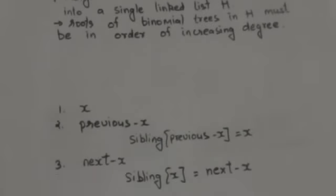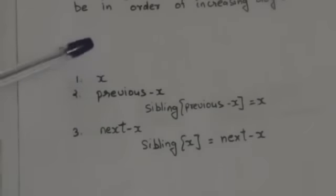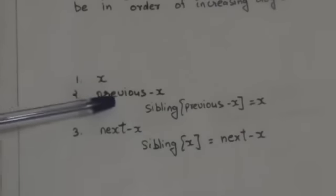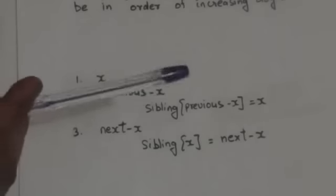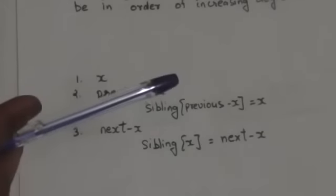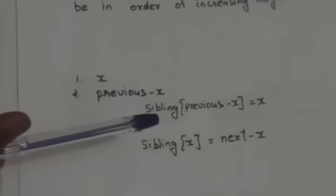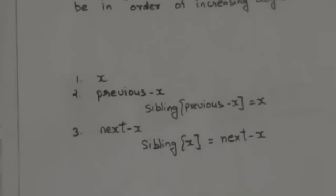We will maintain three pointers in the root list. The first one is x — x points to the root which is currently being examined. The second is previous x — previous x points to the root preceding x in the root list, and the sibling of previous x is x. The third is next x — this pointer next x points to the root following x in the root list, and sibling of x will be next x.